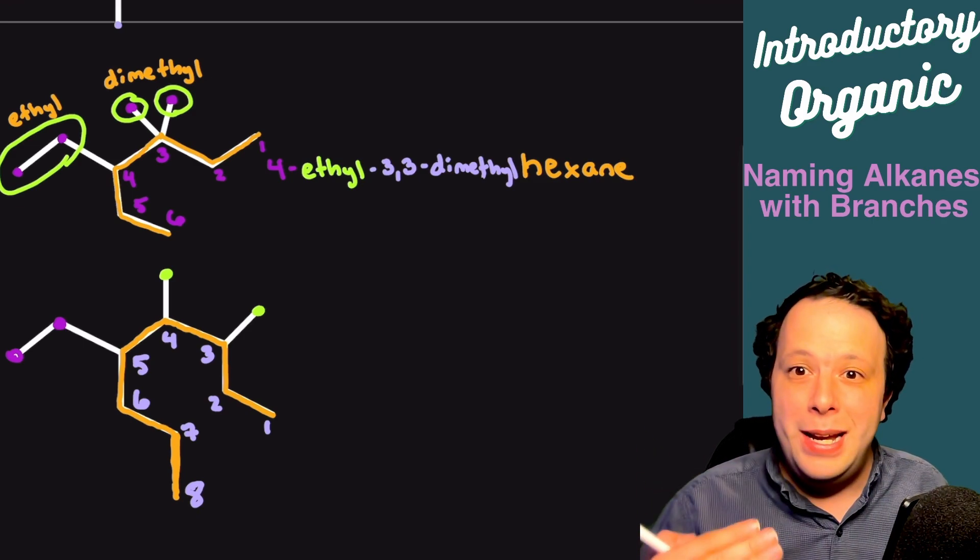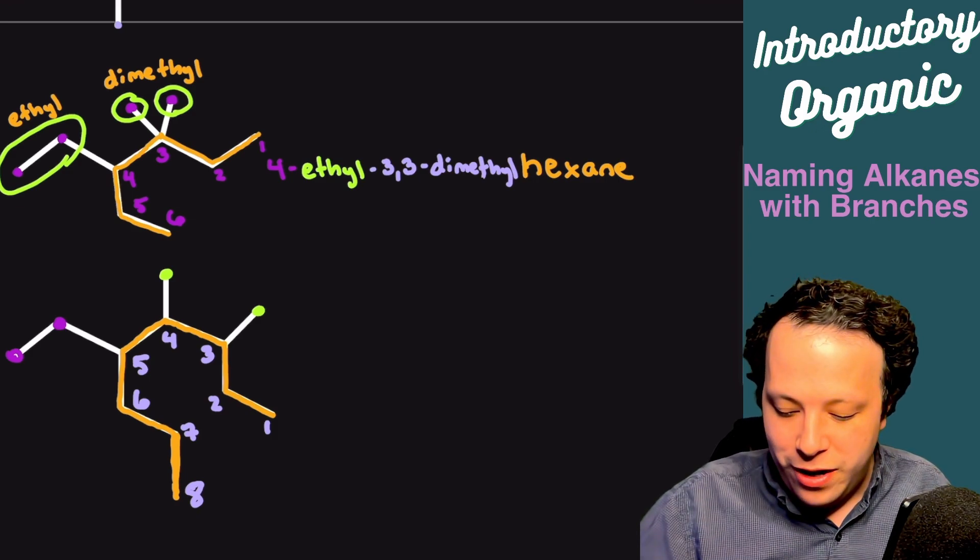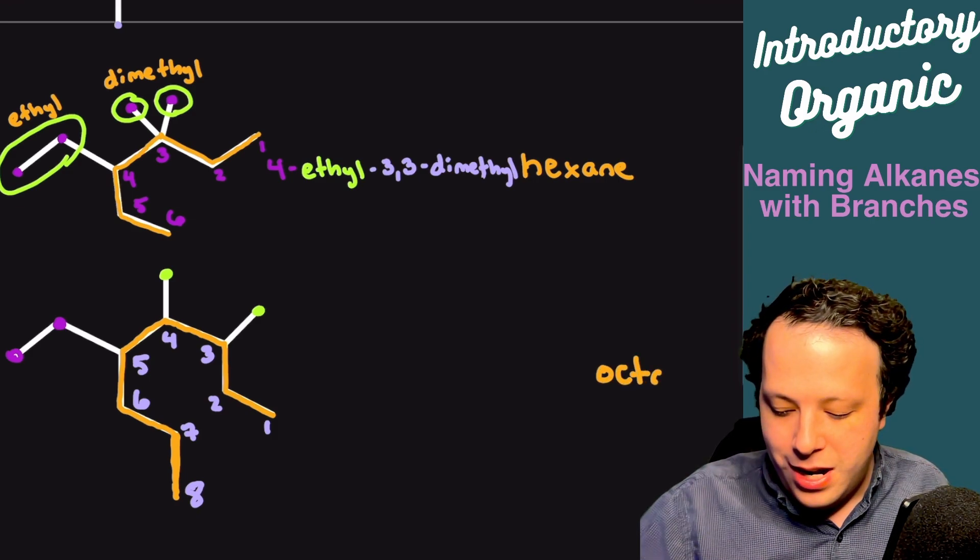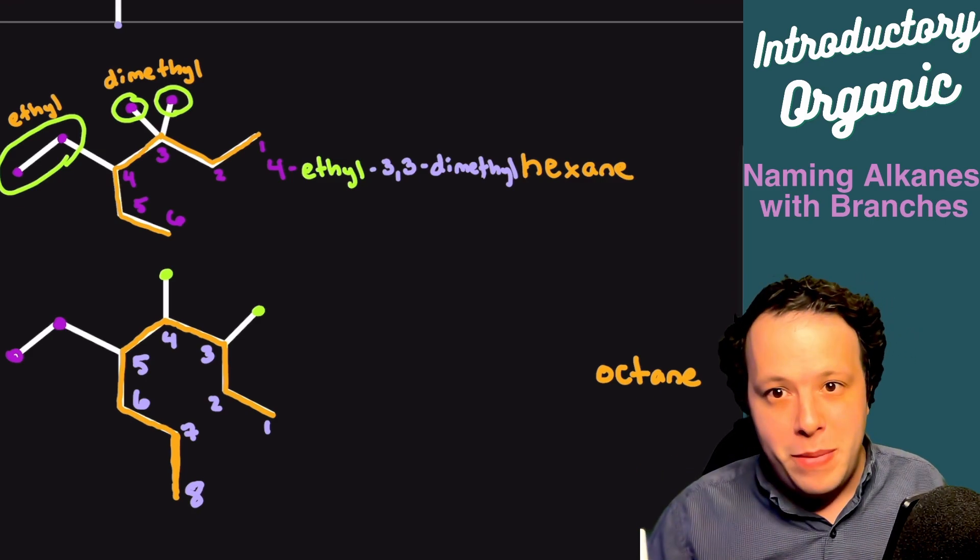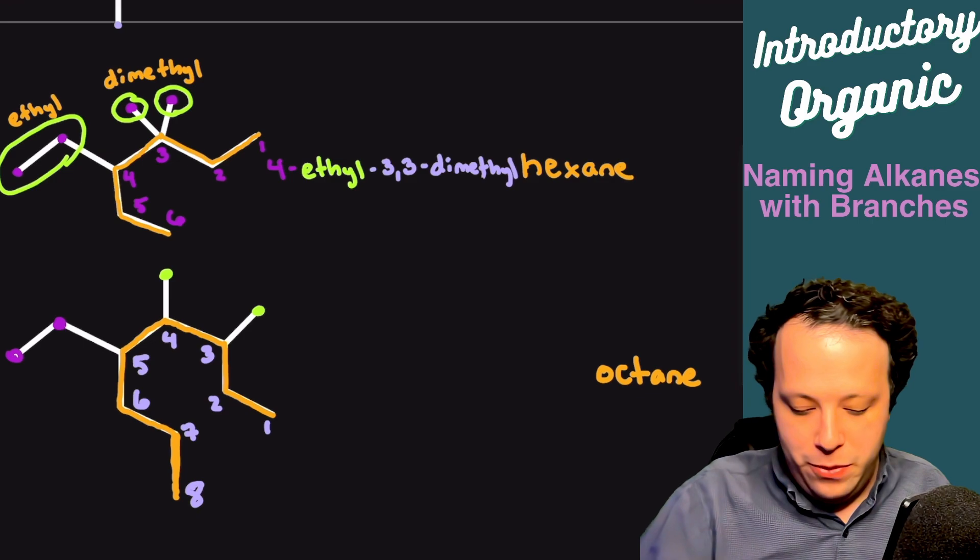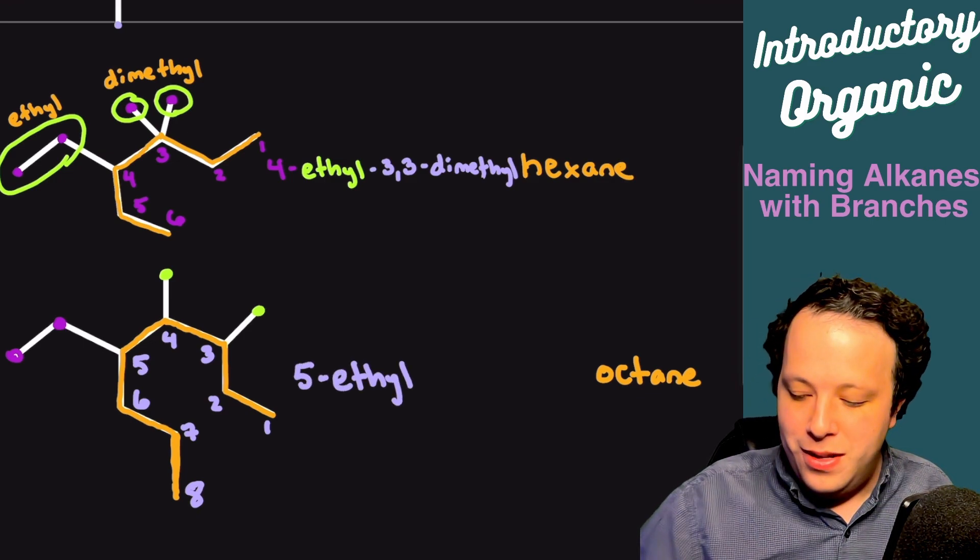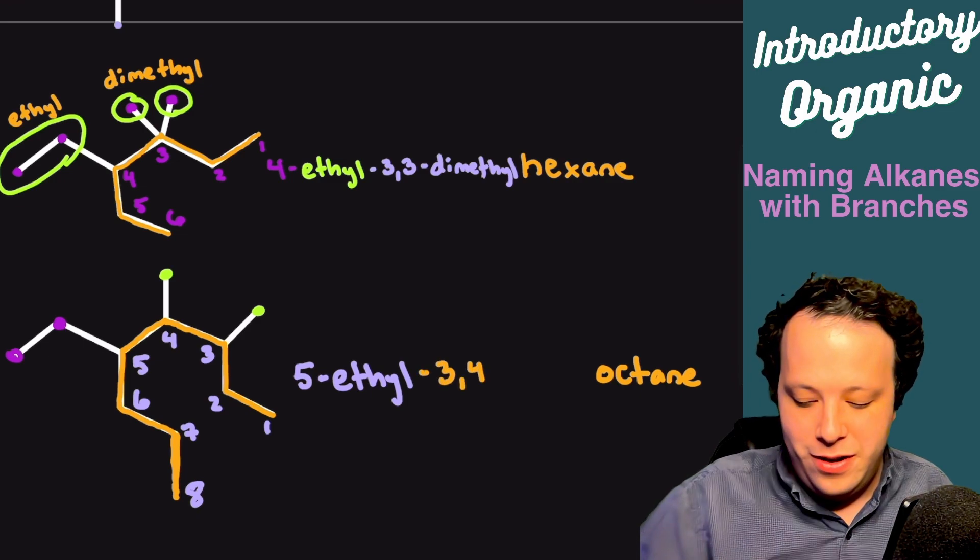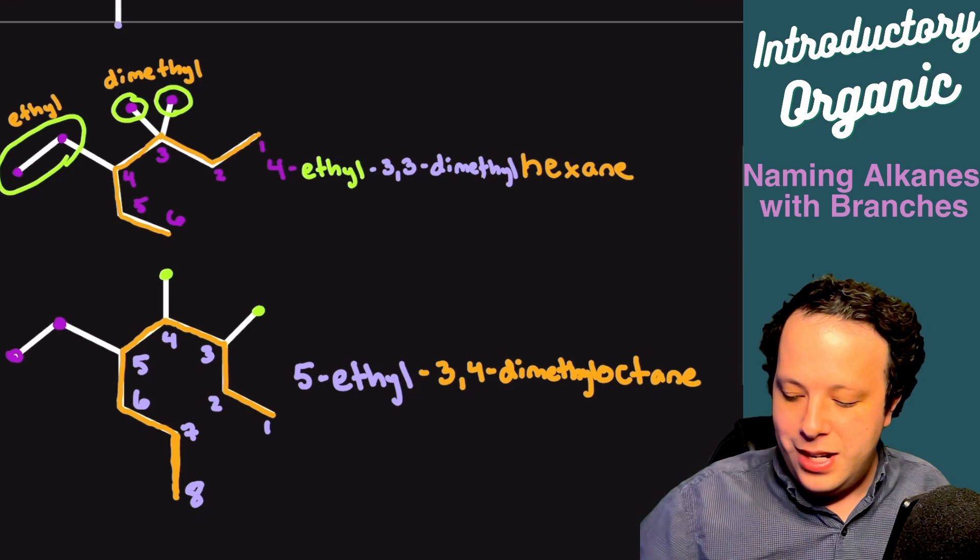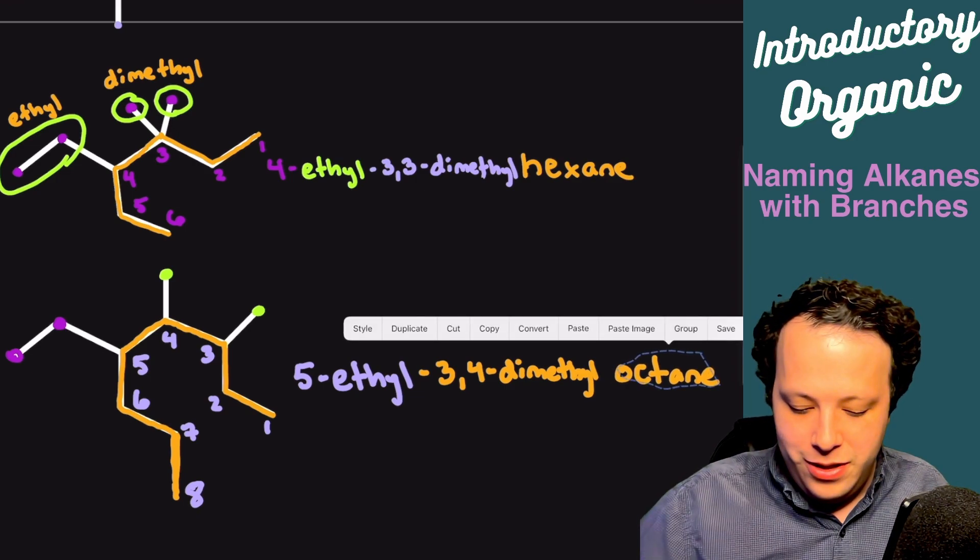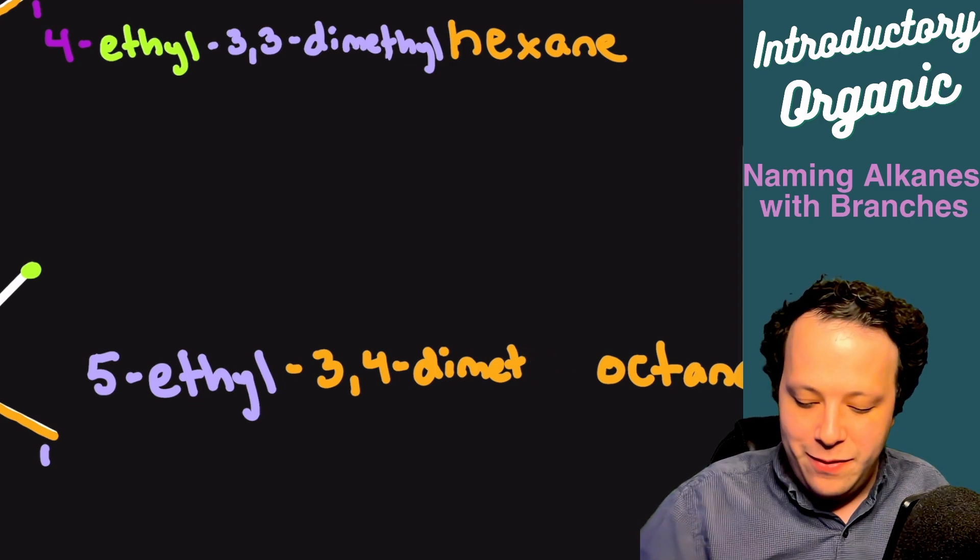So how would we go about numbering this? First thing is name your parent chain. What was eight, which is octane. Then alphabetically, what comes first, ethyl or methyl? Well, E before M. So what we will do is we will number that. We have 5-ethyl, and then we will put 3,4-dimethyl for the other branches. And that is our entire name. So it would be 5-ethyl-3,4-dimethyloctane would be the entire name for the species.